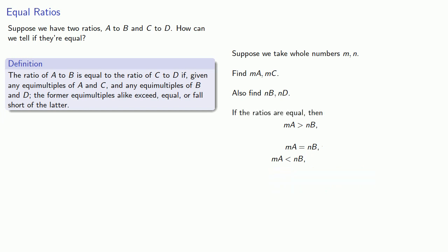And so if the ratios are equal, whenever MA is greater than NB, it must also be true that MC is greater than ND. Likewise, if MA is equal to NB, so must MC be equal to ND. And if MA falls short of NB, so must MC fall short of ND.